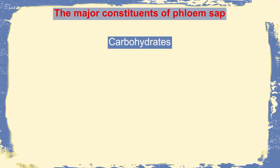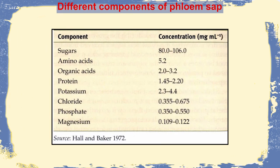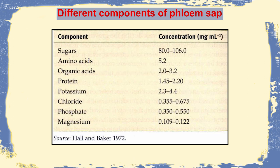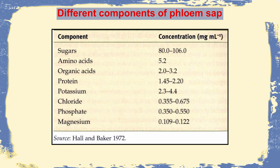To start with, the major constituents of phloem sap are carbohydrate, protein, enzymes, minerals, growth hormone, and organic acid. If we consider the percentages: carbohydrate or sugar is more than 80 percent, amino acids around 5.2, organic acid around 2, protein around 1.5 to 2, potassium around 2 to 4, but chloride, phosphate, and magnesium are in trace amounts, less than 1 percent.